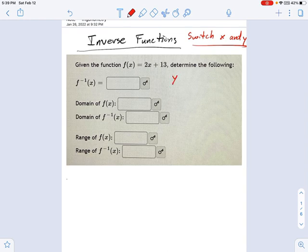I'm going to write that equation as y equals 2x plus 13. I always pick y for f of x because that makes switching x and y very simple. I just switch them. So we get x equals 2y plus 13. And now I solve for y.